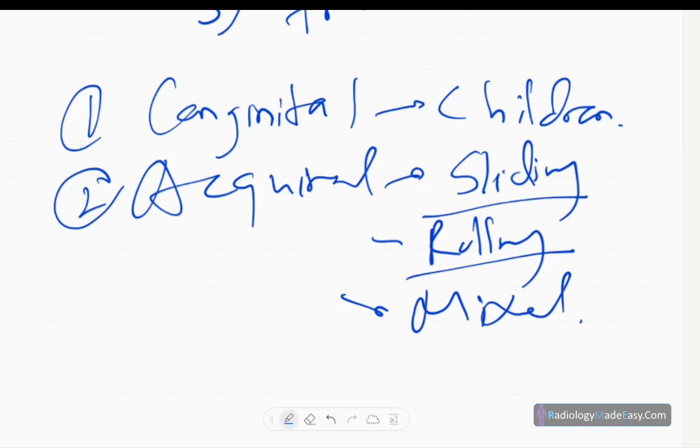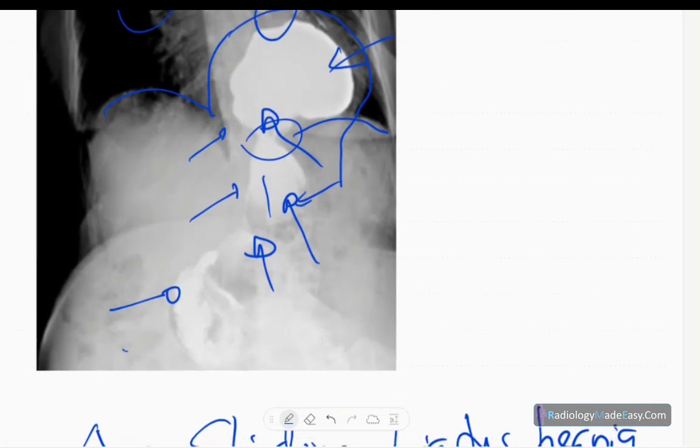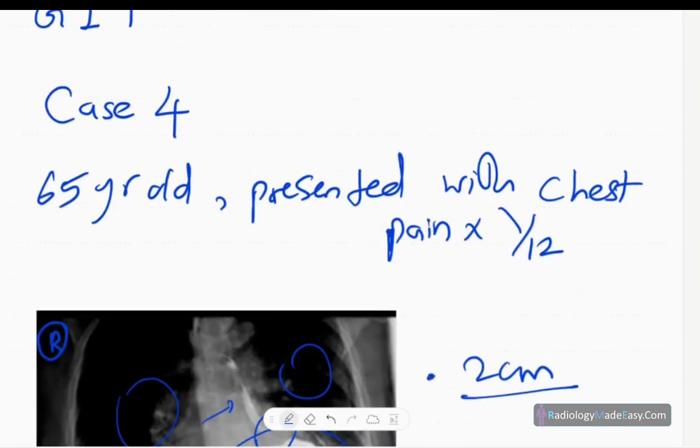Rolling hernias are actually para-esophageal hernias where the gastroesophageal junction is at the normal position and the fundus is rolled out into the thorax. As in this case, you have to exclude any gastric volvulus. You can see the greater curve here, so there's no organ-axial type gastric volvulus. That's important as it's a surgical emergency. That concludes case number four in GIT contrast studies.